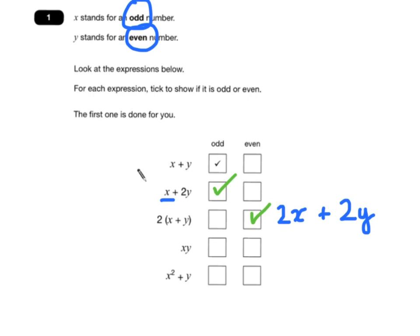xy means x times y, and anything times an even number will end up even. So take x as 3, times 2 is 6, times 4 is 12, and so on. So xy will always end up even.